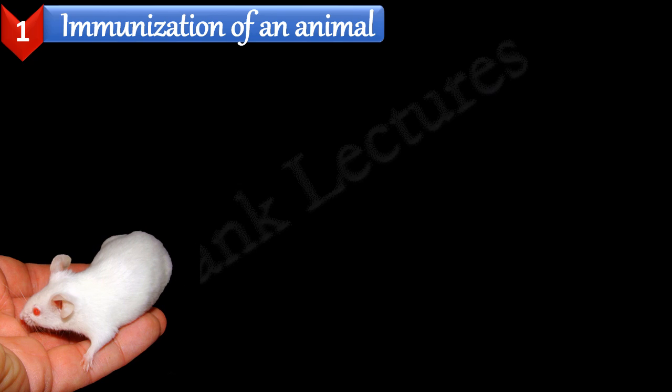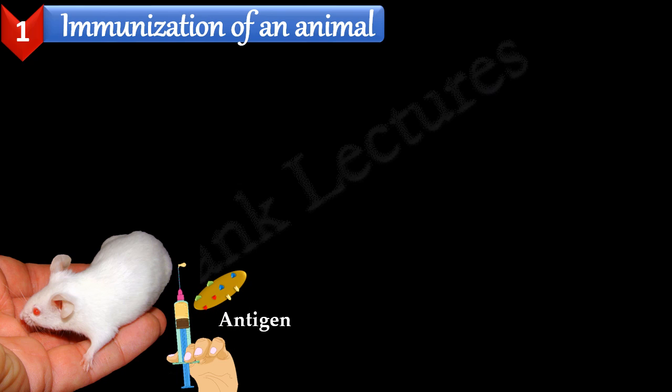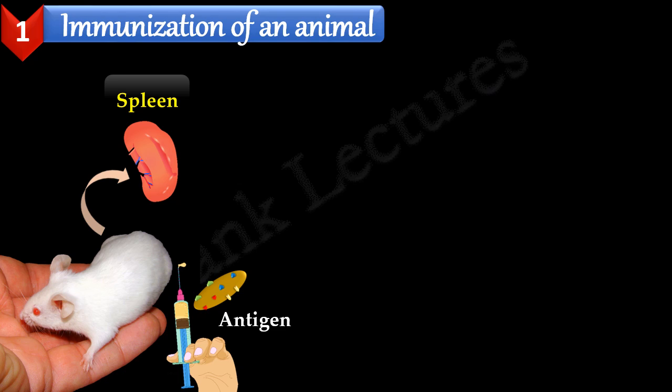Usually the animal used is the mouse. The mouse is immunized with the antigen against which we need antibodies. Let's say this is our antigen, and it has four different epitopes. The mouse is injected with the antigen several times. As a result, mouse B lymphocytes are stimulated against the epitopes or antigenic determinants of the injected antigen. After several weeks, when these B lymphocytes reach an optimal amount, the mouse is sacrificed. The spleen of the mouse is removed aseptically. It is known to us that the spleen is a secondary lymphoid organ, and we can easily harvest activated B lymphocytes from the spleen.